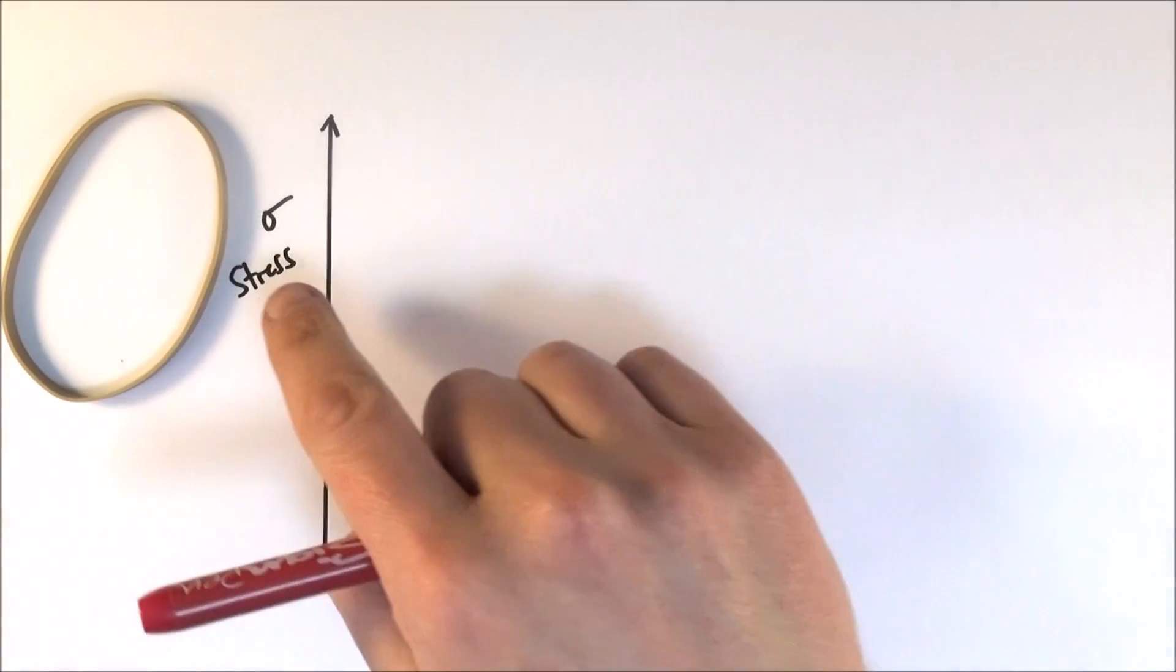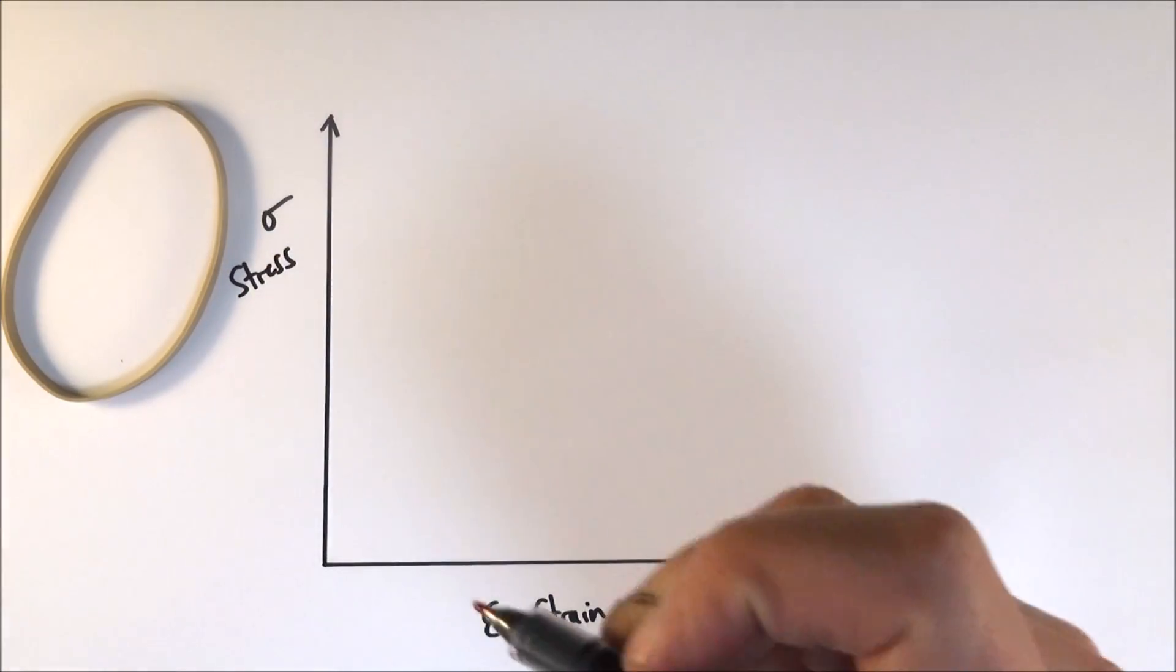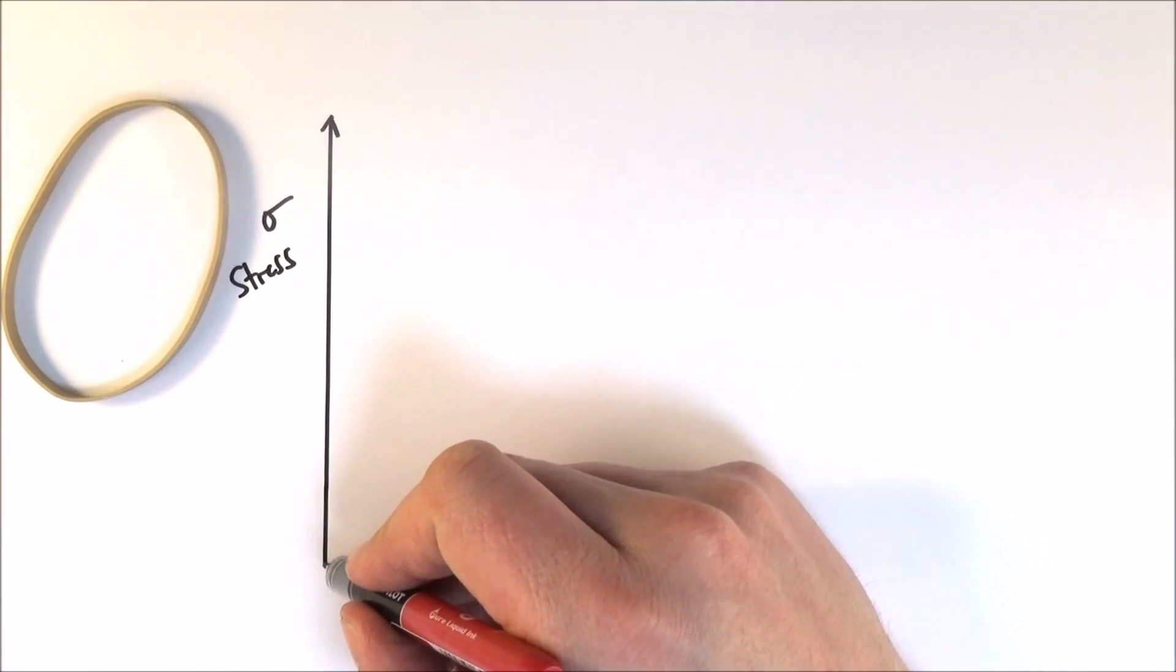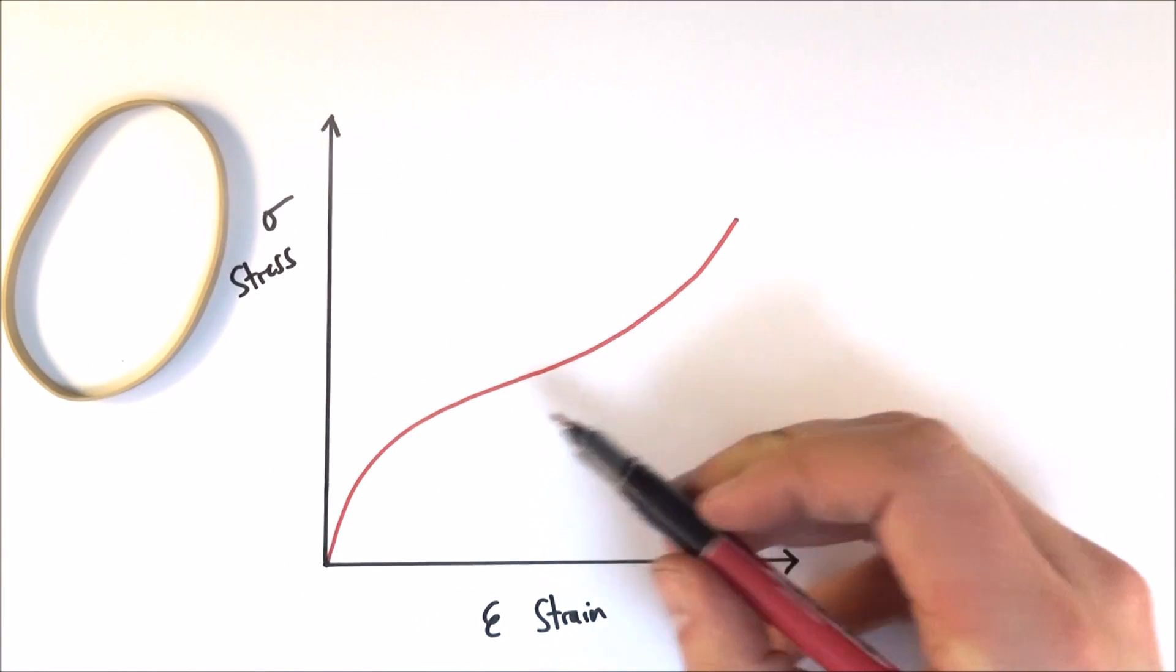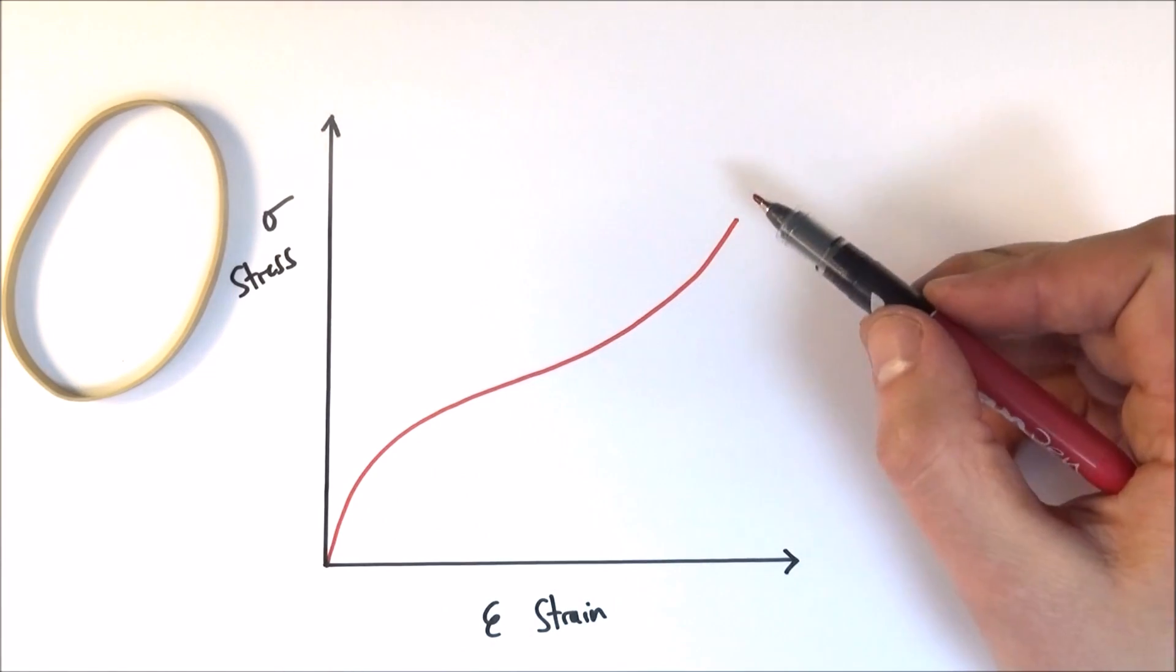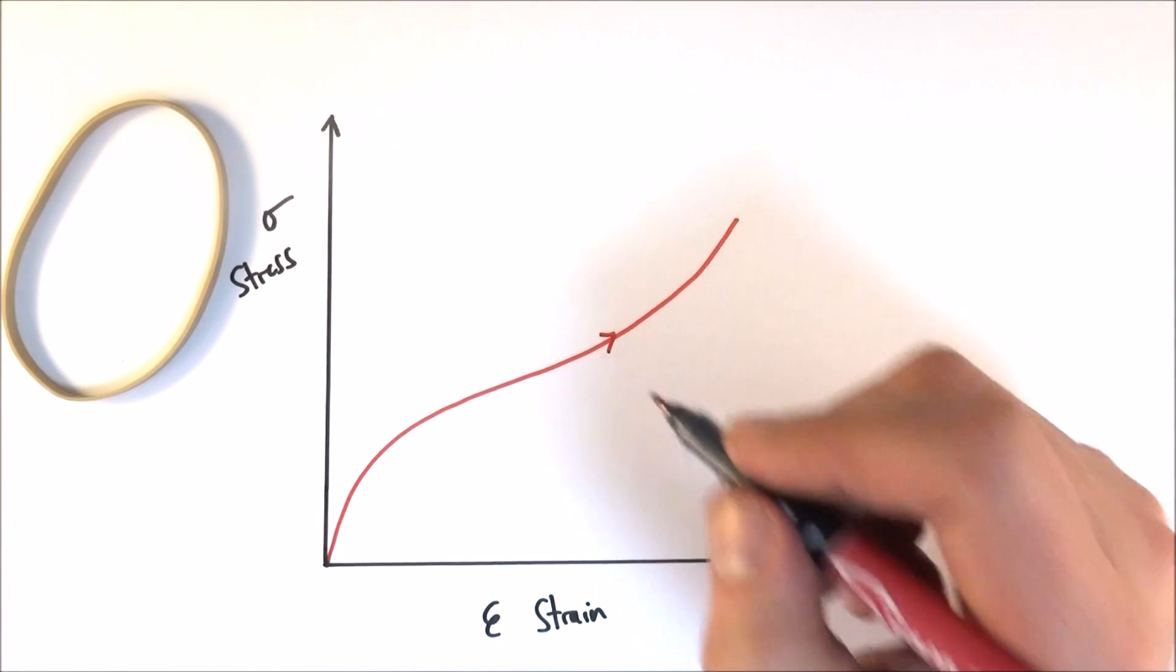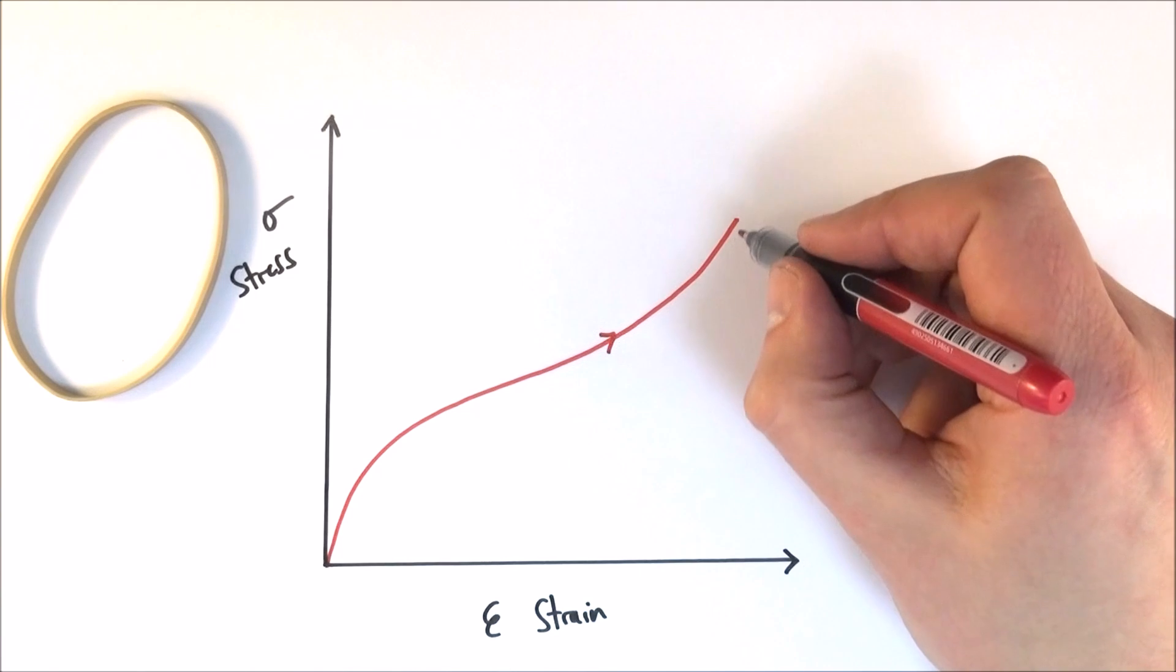In fact, what we can do is plot this on a stress-strain graph, and what we find is as we load it we get a curve that looks a bit like this. So it's hard, easy, then hard to pull, and this is as we are loading it.